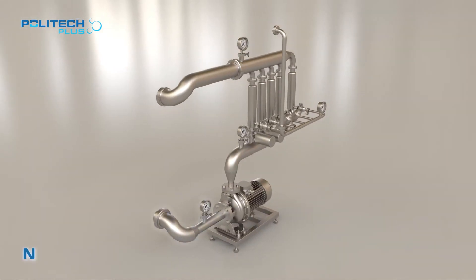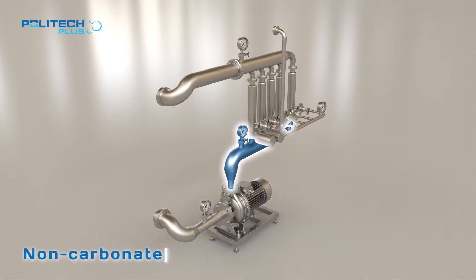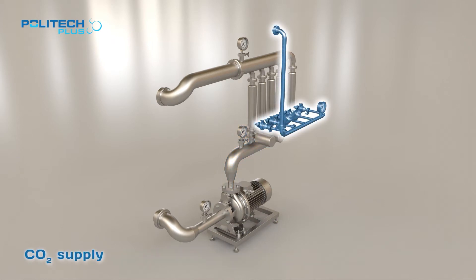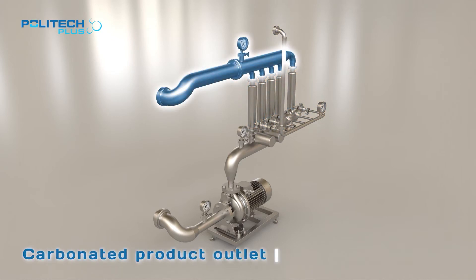Subcarb Carbonator consists of non-carbonated product inlet, product booster pump, CO2 supply, subcarb sections to carbonate liquid at the molecular level, and carbonated product outlet to the buffer tank.